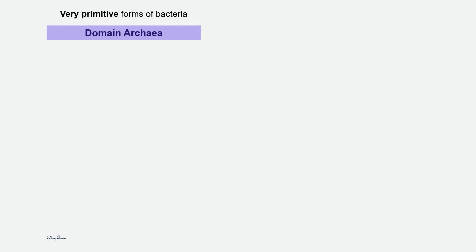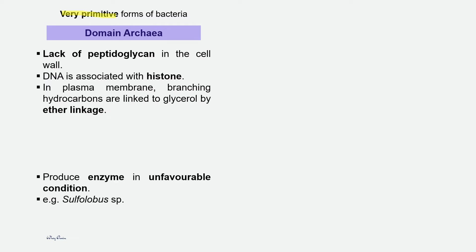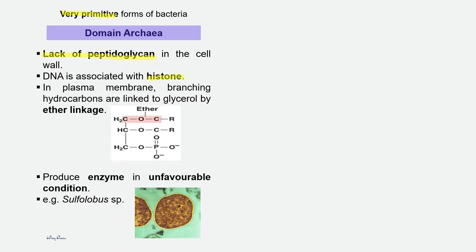Domain Archaea contains bacteria which are very primitive. The cell wall of bacteria under domain Archaea lacks peptidoglycan, and the DNA is associated with histone protein. The phospholipid molecule in the plasma membrane contains glycerol, which is a three-carbon molecule, linked to branching hydrocarbons through an ether linkage.